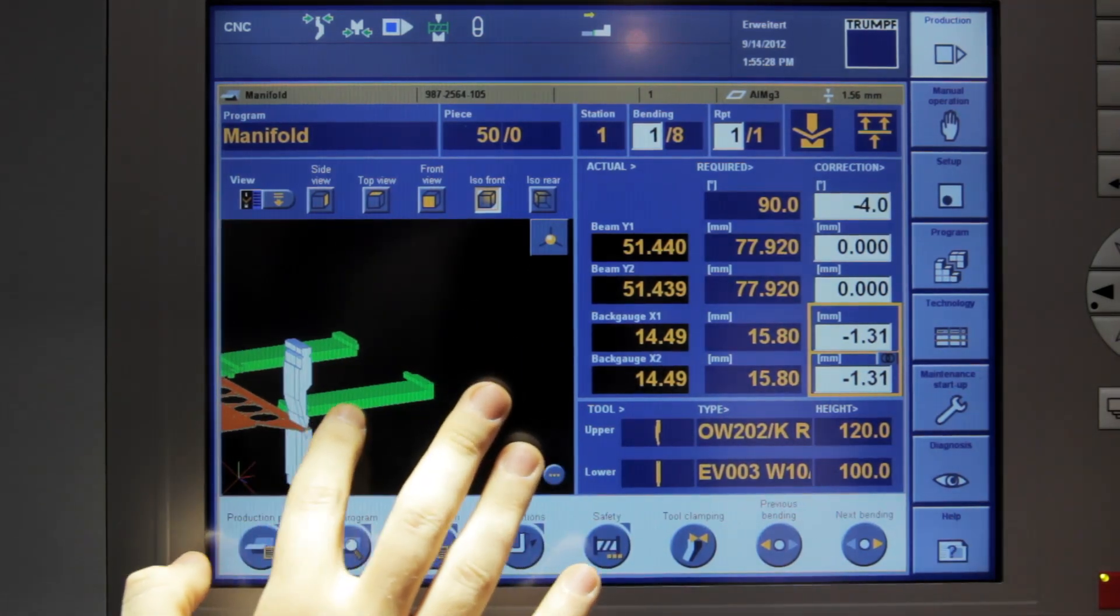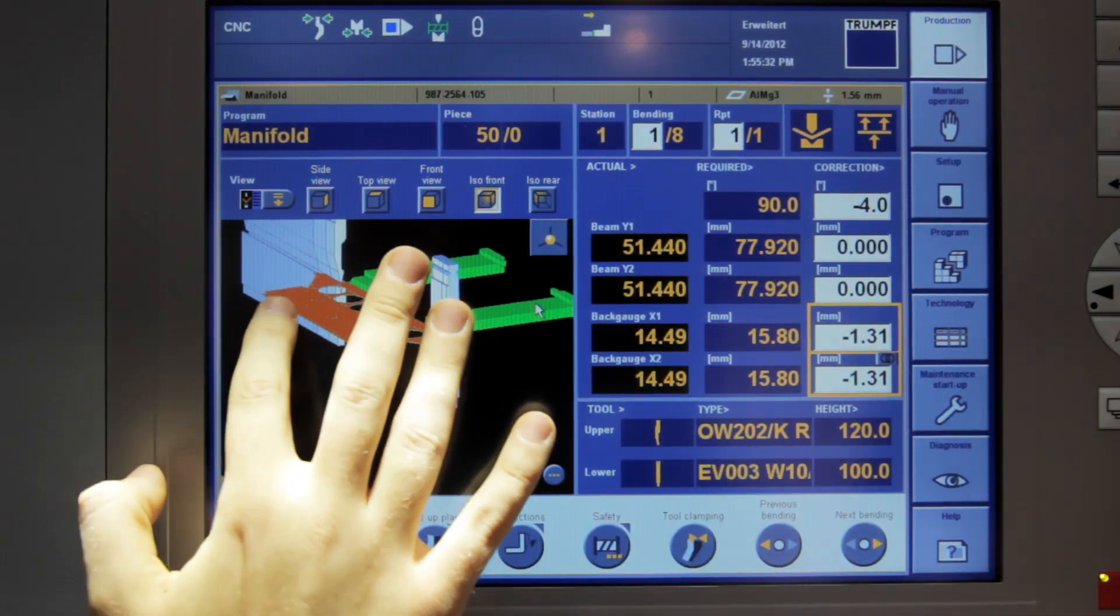What has the B&R control done for Trumpf? B&R's deterministic Ethernet Powerlink system has allowed Trumpf's engineering to be much more flexible in the design and integration of the TruLaser 1030.